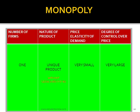Under monopoly, there is a single producer or seller producing or selling a product which has no close substitutes. The demand curve is downward sloping and has a steep slope. Price elasticity is very small. The monopolist has sole control over the supply of the product; the product has only remote substitutes, giving the monopolist very large control over the price of the product.